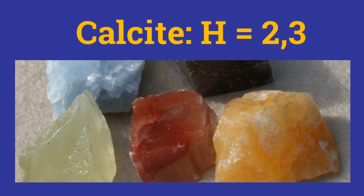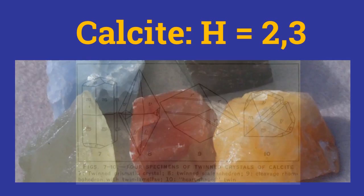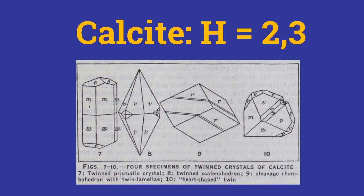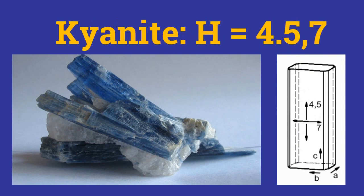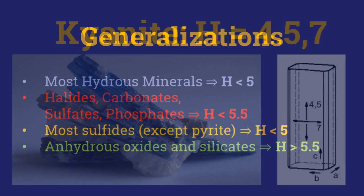Before going to calcite, remember that hardness is a vector property. Some minerals like calcite and kyanite show varying degrees of hardness depending on the direction in which they are scratched. Calcite shows a hardness of 2 on its planar faces, marked by E, but on all other surfaces its hardness is 3. The hardness of kyanite varies from 4.5 to 7 depending on the direction from which it is tested.